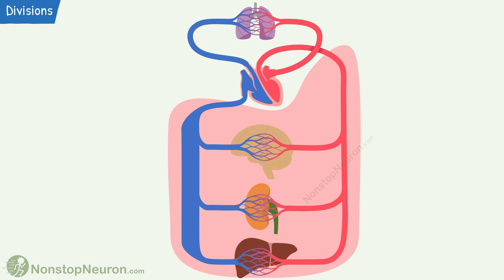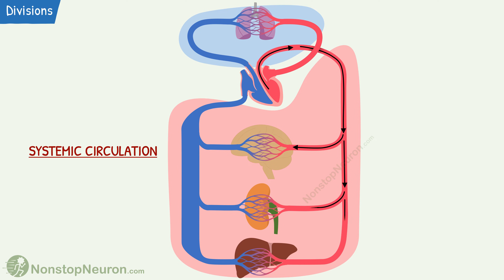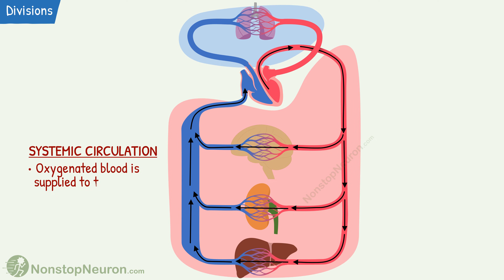Now let's talk about the systemic and pulmonary division of the circulation. Systemic circulation is also known as greater circulation. In this, oxygenated blood is pumped from the left ventricle. It passes through the arterial system and reaches the tissues. At the capillaries, exchange of various substances between the blood and the tissue takes place. After exchange, blood enters the venous system and returns to the right atrium. Thus, in systemic circulation, oxygenated blood is supplied from the heart to tissues, and deoxygenated blood returns to the heart through veins.